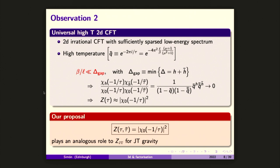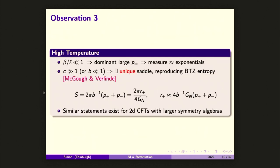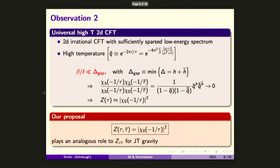Our proposal is to take — notice that there is no near-extremal limit here which gives rise to JT — so in principle we should recover JT in some sense that I'll mention in a second. This is our proposal from the CFT side to describe what we were trying to look for. The statement about the relationship between that and the Cardy formula is not exactly the same. This is a statement about the existence of a universal high temperature behavior of the total partition function.